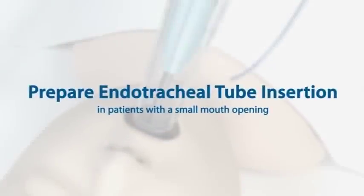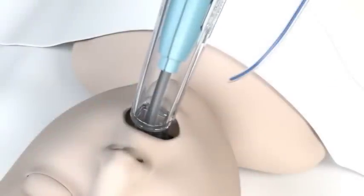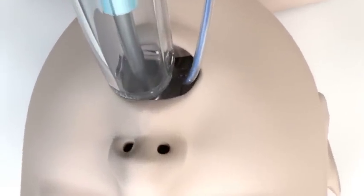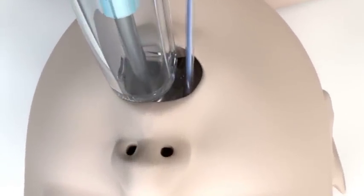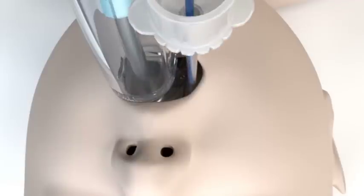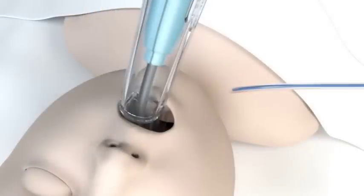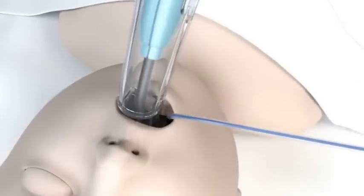One technique for working with the infant that has a small mouth opening is to move the stat over to the left slightly, giving you more space to introduce the endotracheal tube. The endotracheal tube should be placed adjacent to the stat and then advanced into the glottic opening. Another tip is to have the endotracheal tube enter from the corner of the mouth, being very careful that you observe the placement of the endotracheal tube to avoid any trauma to the soft tissue.